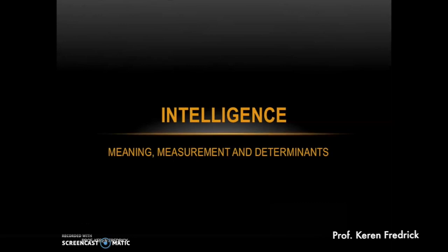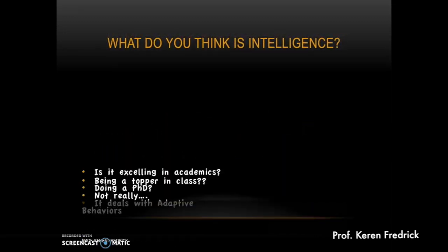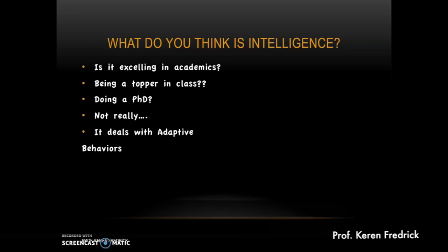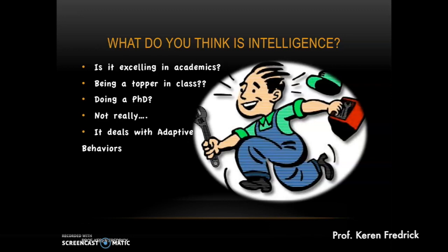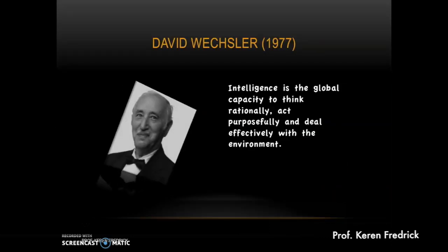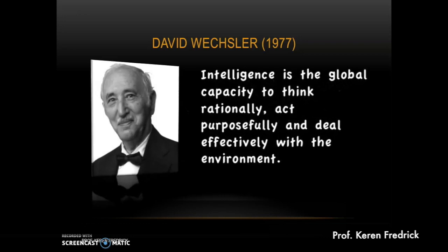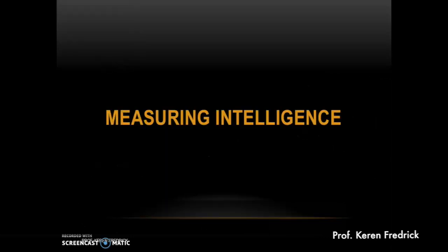Today we are going to consider the meaning, measurement, and determinants of intelligence. Is intelligence being a topper in class or attaining the highest education? Not really. Intelligence deals with adaptive behaviors — behaviors that allow you to adapt effectively in the environment, learn from experiences, and use available resources. David Wechsler in 1977 first defined intelligence as the global capacity to think rationally, act purposefully, and deal effectively with the environment, leaning on adaptive behaviors. This is also the view held by the current DSM-5.